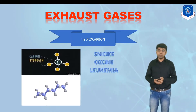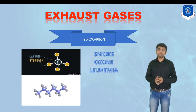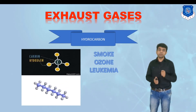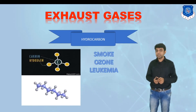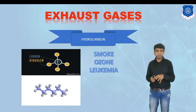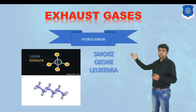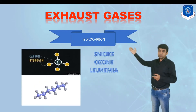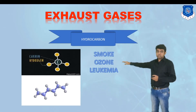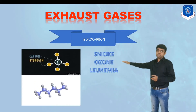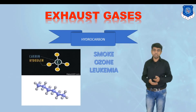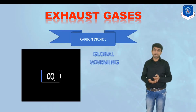The next one is hydrocarbon. Hydrocarbons in exhaust gas indicate incomplete combustion — the fuel material is made up of hydrocarbon chains, and if left unburned it forms hydrocarbons at the exhaust pipe. This can be identified by smoke. It has a huge effect on the ozone layer and may lead to the formation of leukemia, that is blood cancer. So we need lower hydrocarbon values.